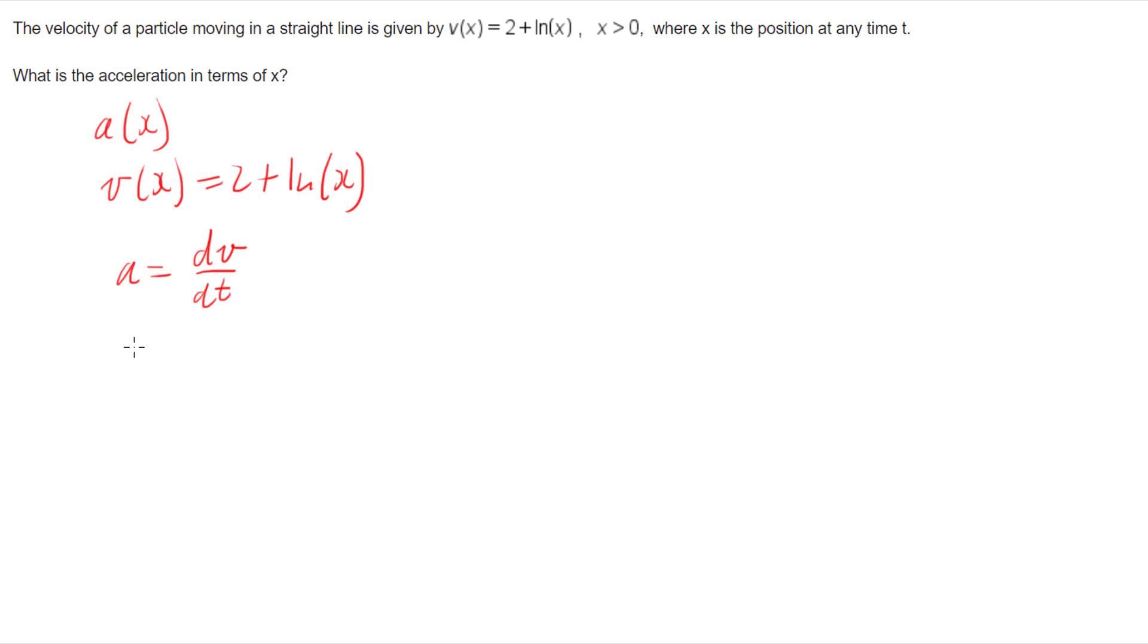So if I play around with the chain rule, I can show that our acceleration, instead of being just a derivative of velocity with respect to time, I can show that it's the derivative of velocity with respect to position times the derivative of position with respect to time. And I know that if those two cross out, I've got dv/dt, which is what acceleration is.